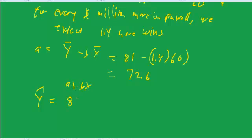And x is 70. y hat is equal to a, which is 72.6, plus b, which is 1.4 times 70, which would be equal to 82.4. And so that would be the prediction of the number of wins you would get if you raised the payroll from 60 million as being on the average to 70 million.